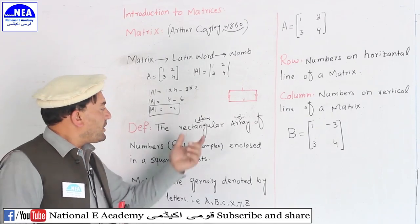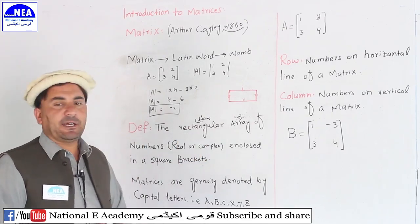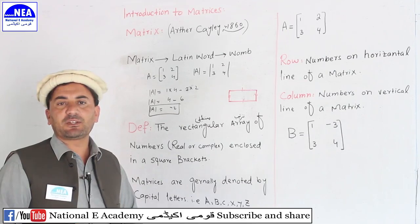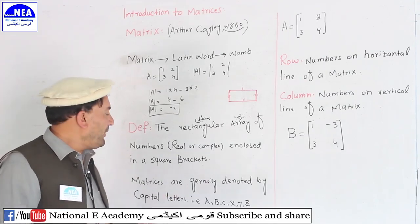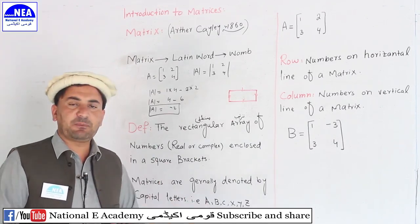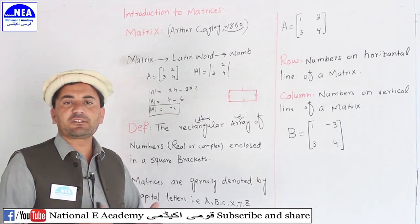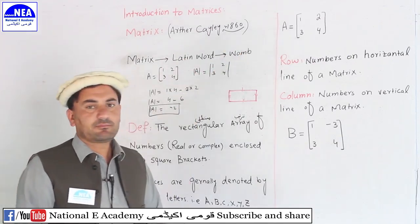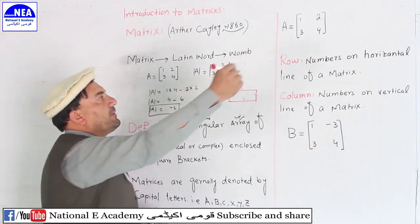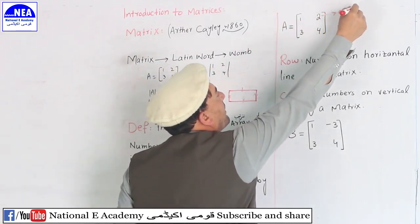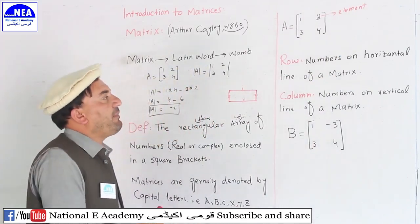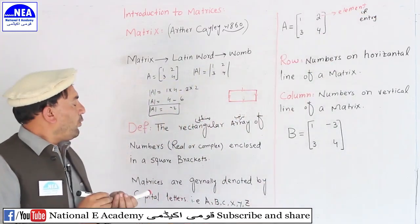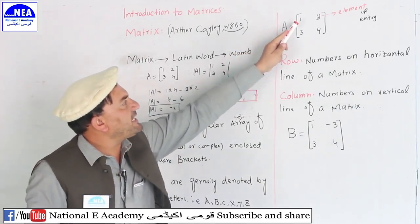If the numbers are enclosed in a rectangle or square bracket, this is the matrix. If this is the matrix, it is denoted by English capital letters A, B, C, D, X, Y, Z, M, N. For example, this matrix is matrix A. The numbers inside the matrix are called the elements or entries of the matrix.